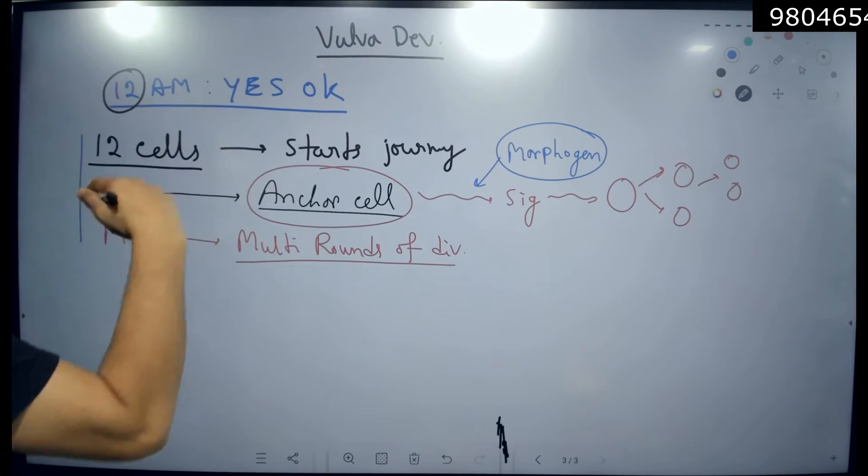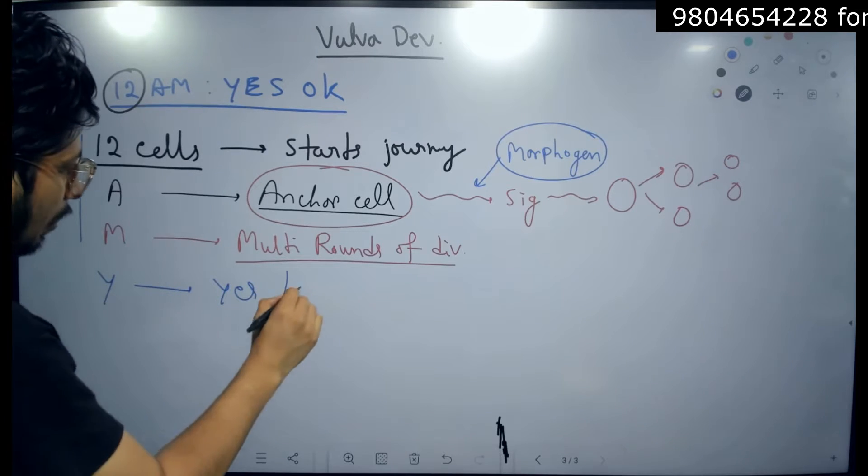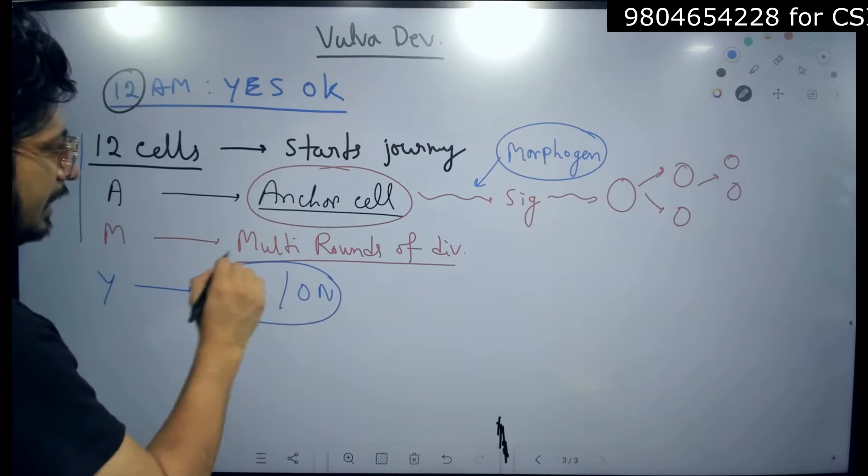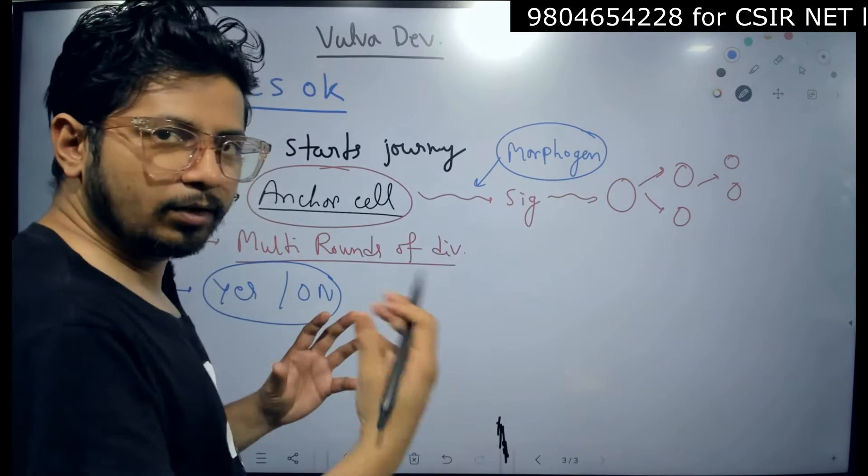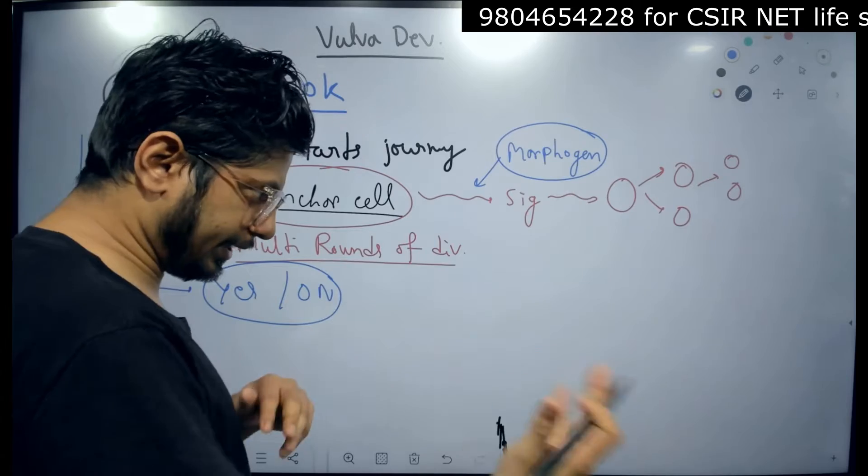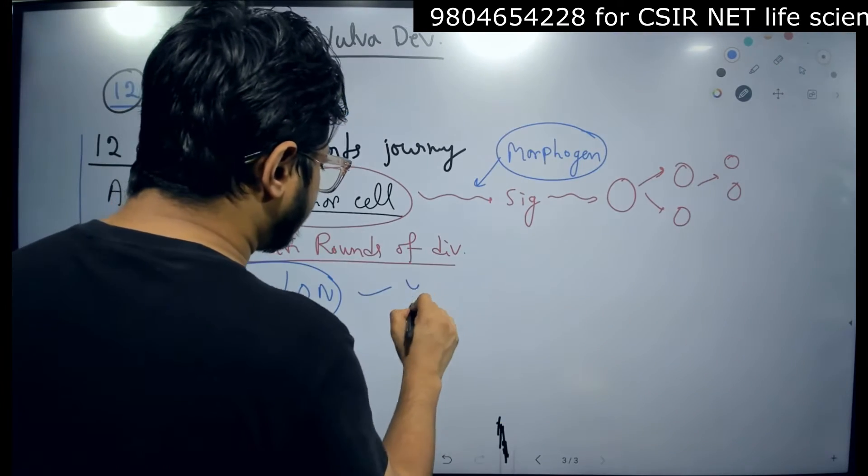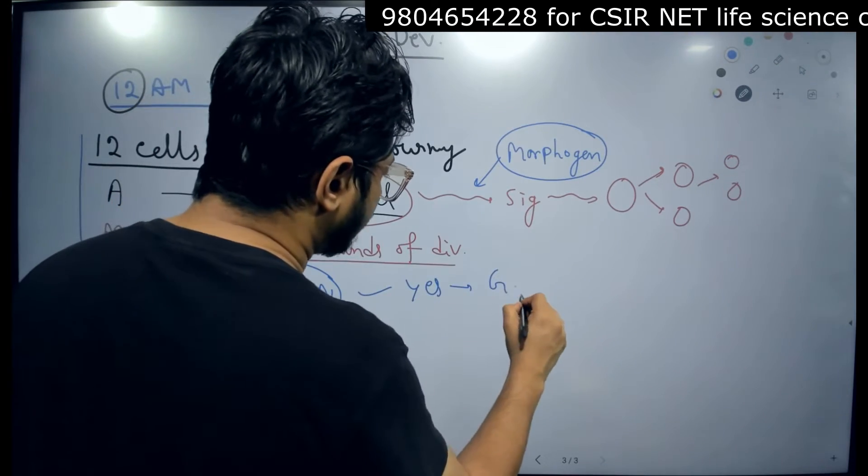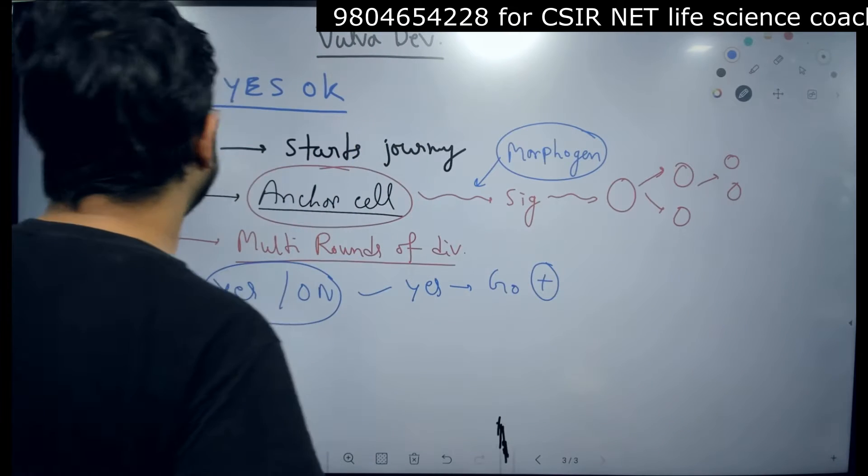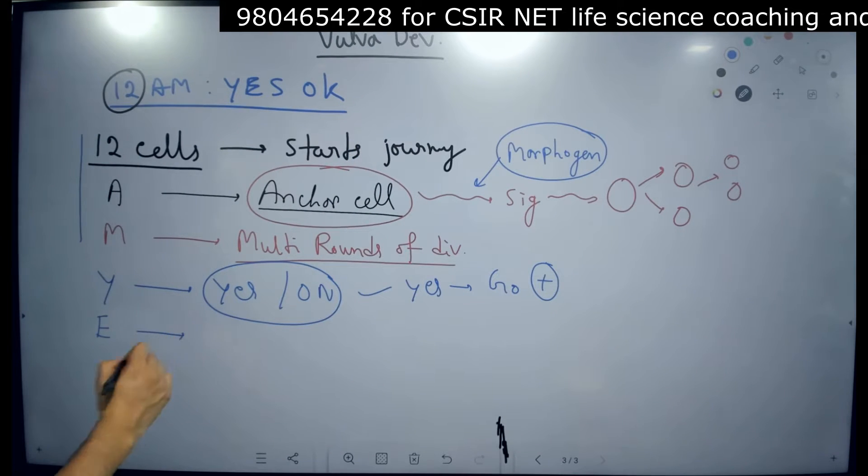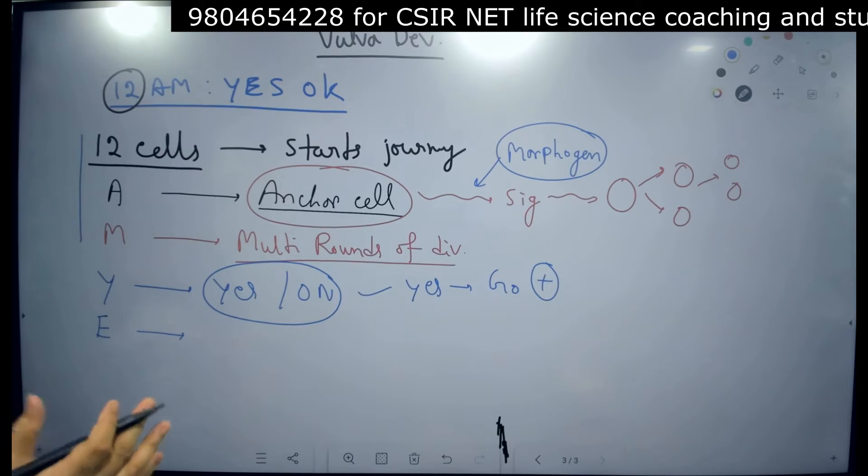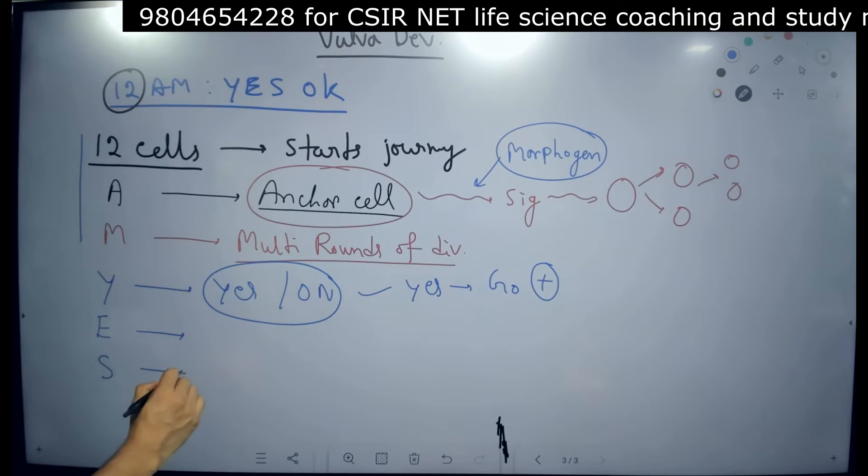So 12am portion is done. Now we have E, Y, yes. Either yes or no. This is the result of the signaling. The signaling done by morphogen. The signaling either can cause the cell to grow and divide or not. Yes or no signaling. If it is yes, then it is a go. It is a positive site for vulva development. Then we have Y, E, E and S.